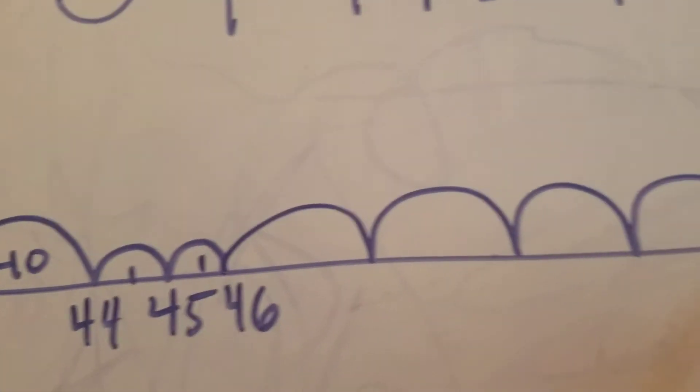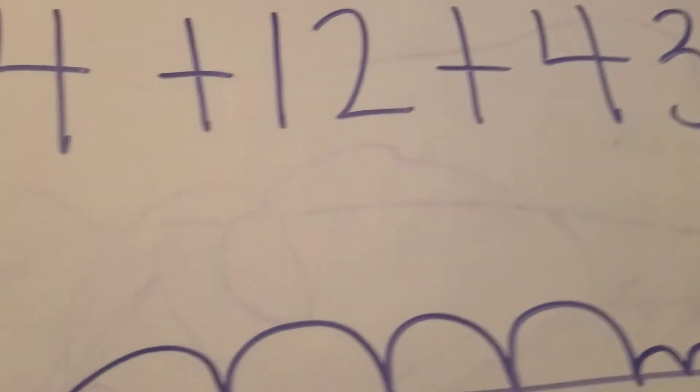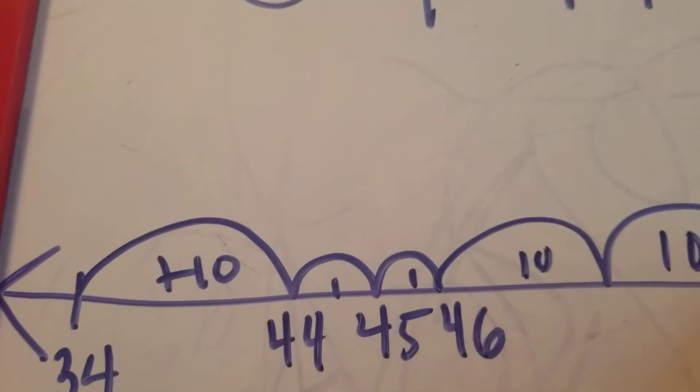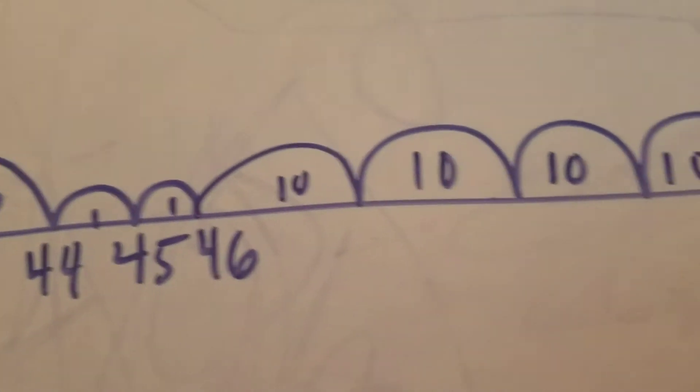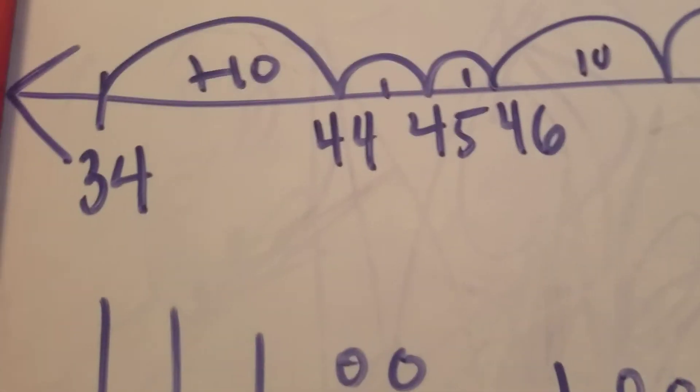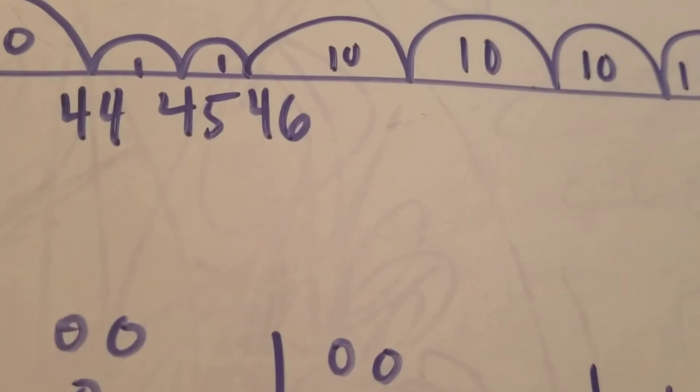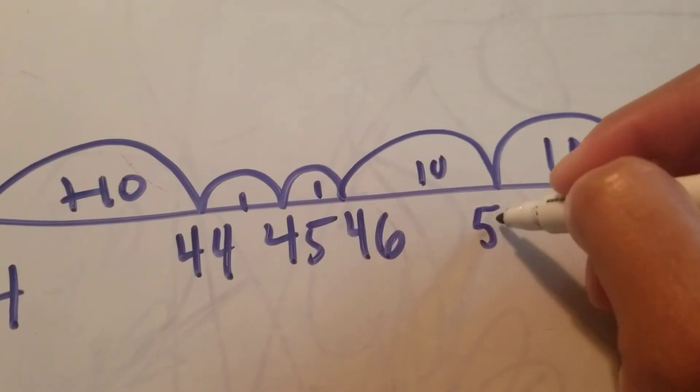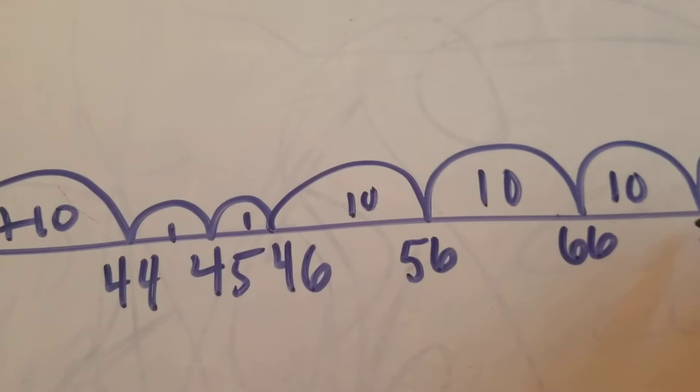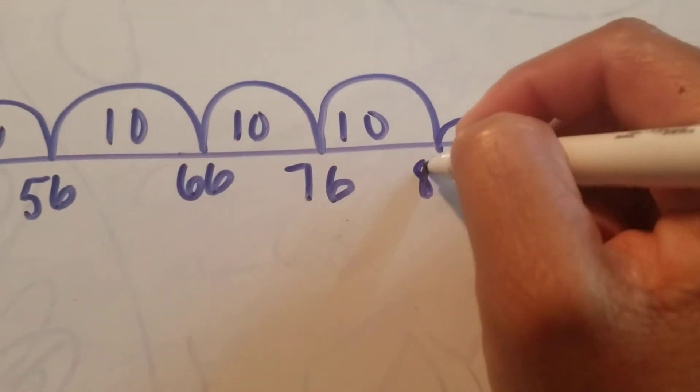I have to remind myself that this is adding 10 each time and then my ones. If I'm at 46 and I add 10 more, that would go right up to 56, and then 10 more would be 66, and then 76, and then 86.